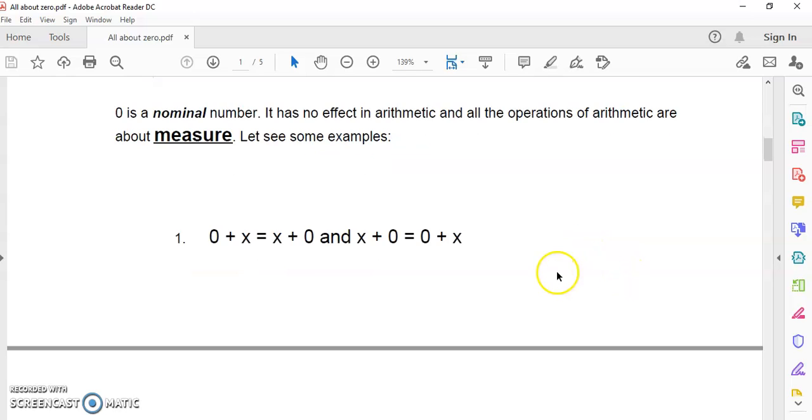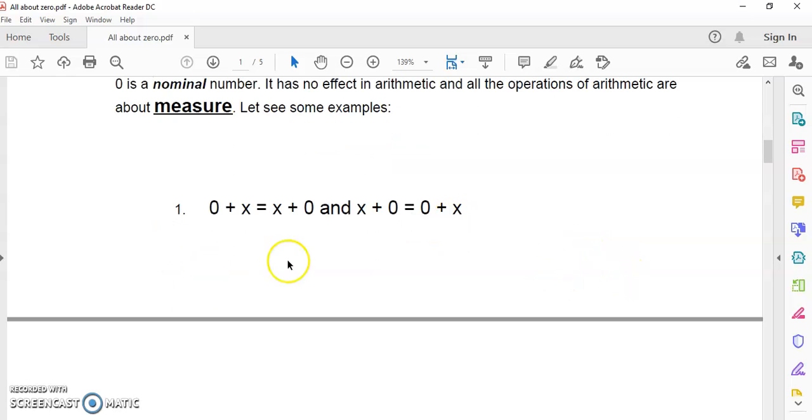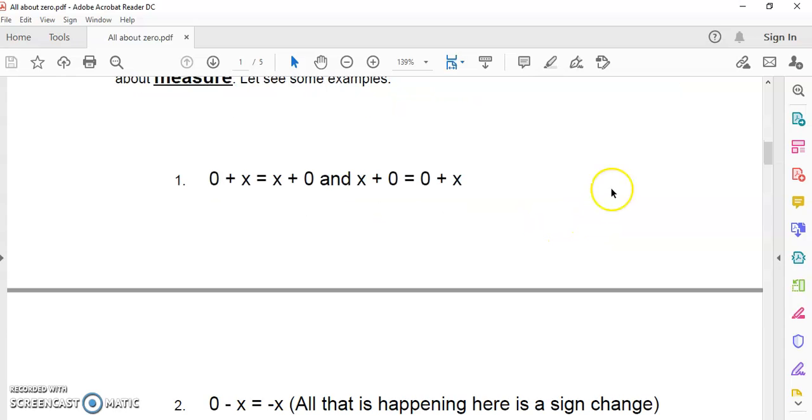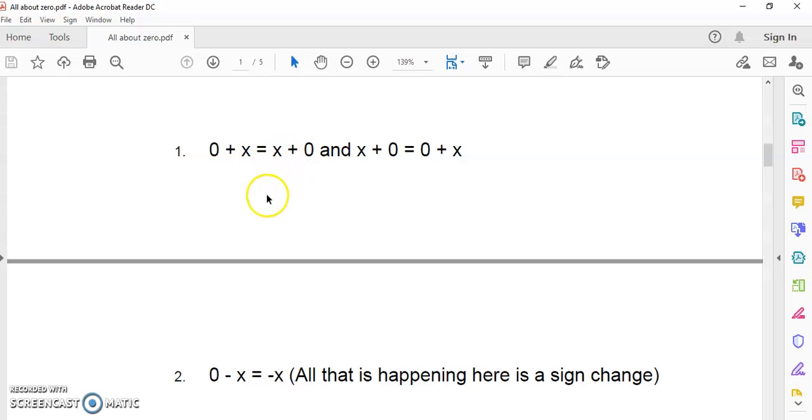It means it's a number in name only. So we'll look at the four operations of arithmetic and see that, well, let's start off with addition. So addition has no effect. It doesn't matter how you add zero to a certain number. The number, nothing changes on either side of this equation or equality. Nothing.